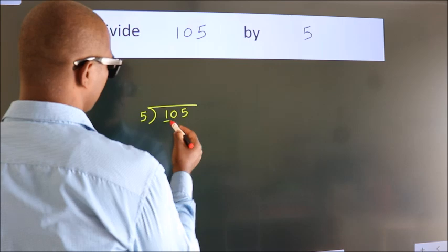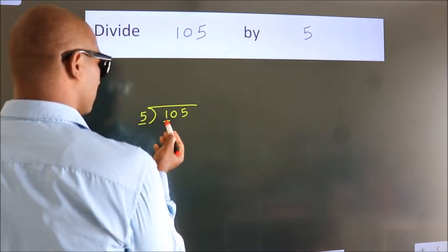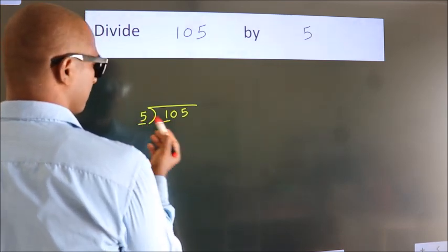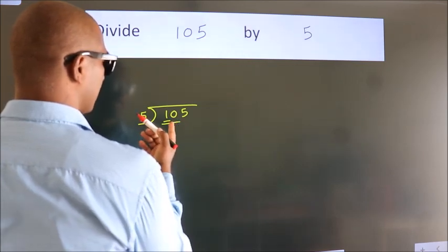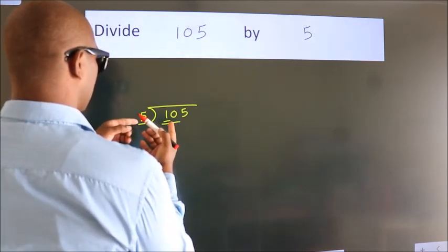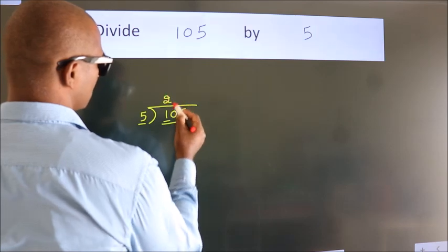Here we have 1, here 5. 1 is smaller than 5, so we should take 2 numbers: 10. When do we get 10? In the 5 table. 5 twos, 10.